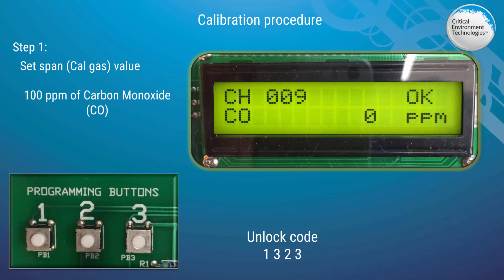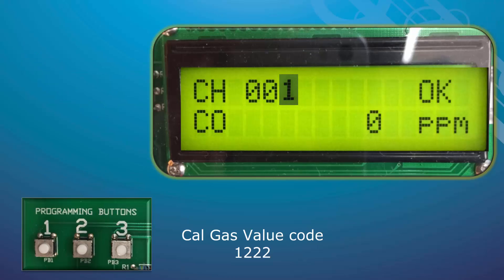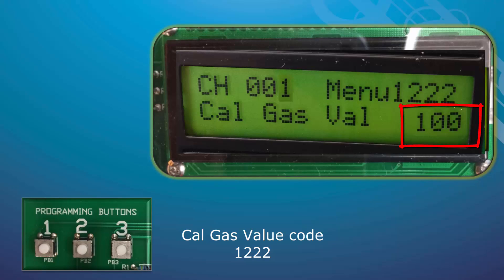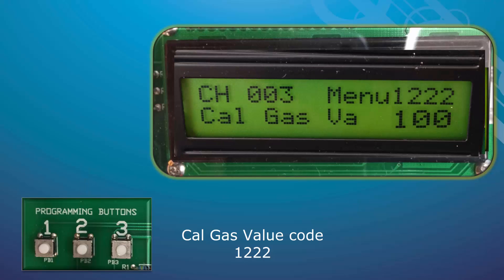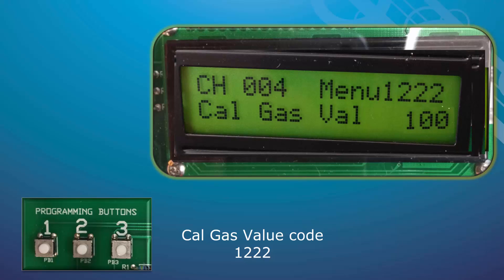To set the Calgas value, use the programming buttons to enter the code 1222. The default Calgas value is 100. If you are using a different calibration gas concentration, such as 50 ppm or 75 ppm, you will need to change this value by pressing programming button number 1 to decrease the value or number 3 to increase the value. Holding the push button will scroll the numbers quickly. Once the correct value is achieved, press button number 2 to accept and proceed to the next active channel. Repeat this procedure for all active channels, which in this case is 4. At the last channel, press button number 2 again to save and finish.